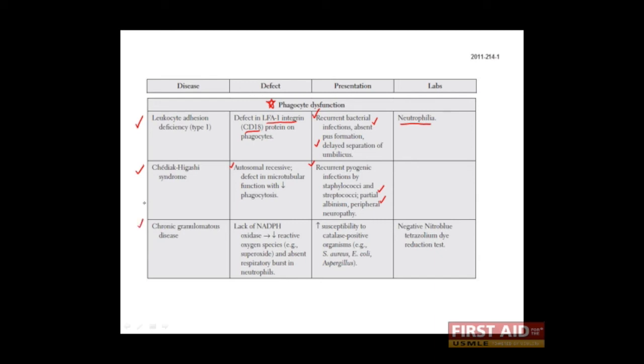Finally, we come to chronic granulomatous disease. Chronic granulomatous disease occurs because of a defect in NADPH oxidase. In phagocytes, this enzyme is critical for generating reactive oxygen species, such as superoxide.